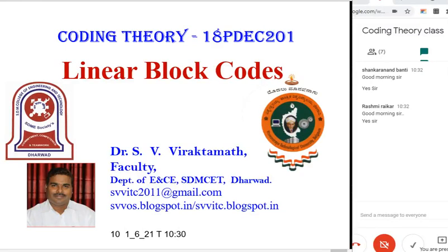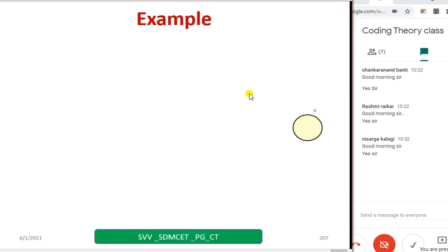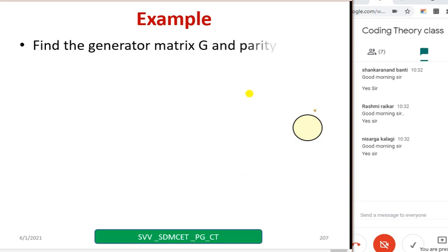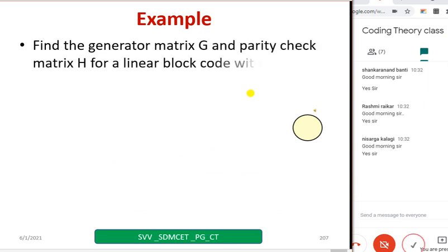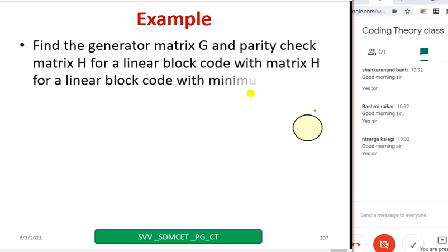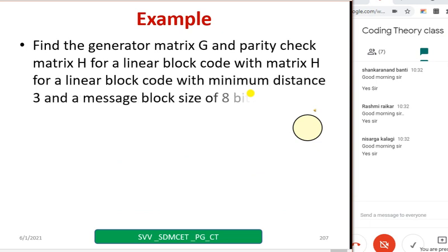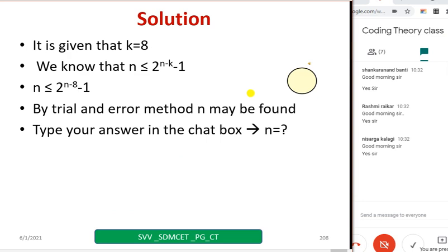Let's start today's class. We are discussing the linear block code chapter. Last class we took a particular example: find the generator matrix G and a parity check matrix H for a linear block code with a minimum distance 3 and a message block length k equal to 8.